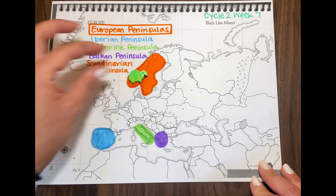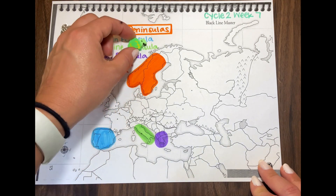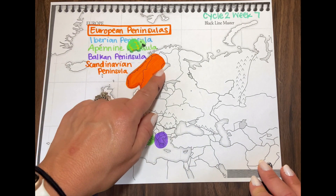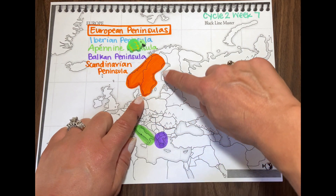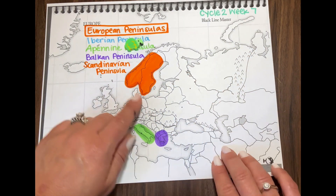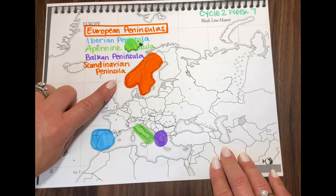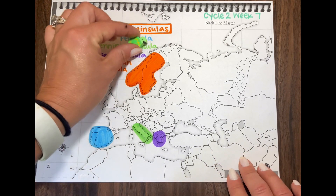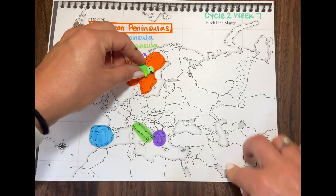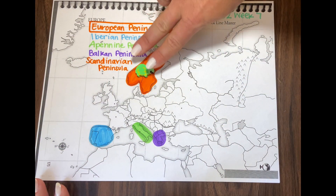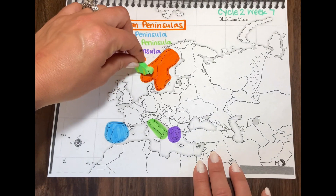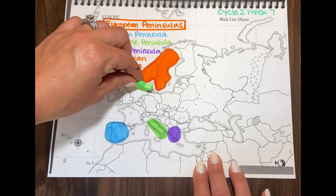So let's take our little turtle and move through these together. Up in the north, we have the Scandinavian peninsula. Surrounding the Scandinavian peninsula, we have the Baltic Sea and over here is the North Sea. It looks kind of like two fingers pointing down south. So we're going to take our turtle and have him swim across the North Sea.